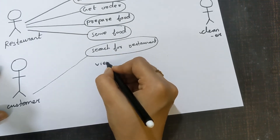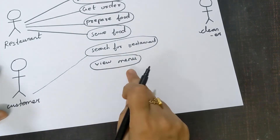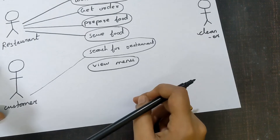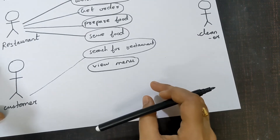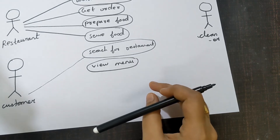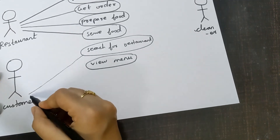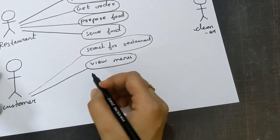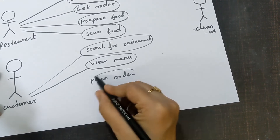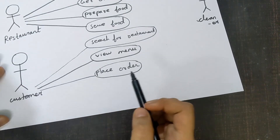Next, view menu. The customers will view the menu — what food items are available in this particular restaurant. That is the first step they do, because they want to see the menu and then order whatever they like. Join this using the connector. Next, place order. After viewing the menu, they will place the order for the food which they like. Join this using the connector.